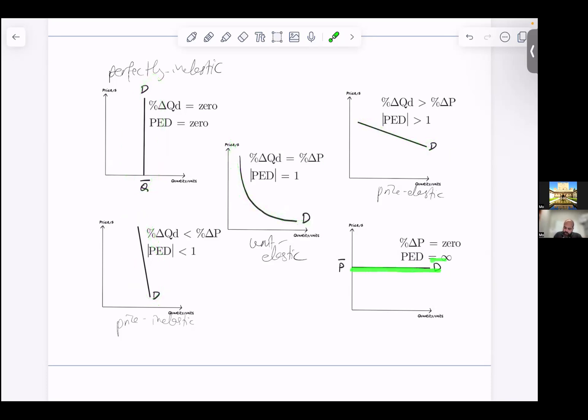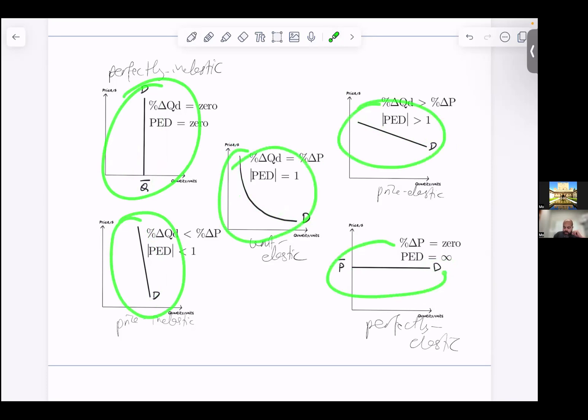You've got price elastic, which is a relatively flat curve, and then you've got a horizontal curve, which is perfectly elastic. And these are basically the five possible demand curves that you could encounter when you're talking about the different demand curves in the case of price elasticity of demand.